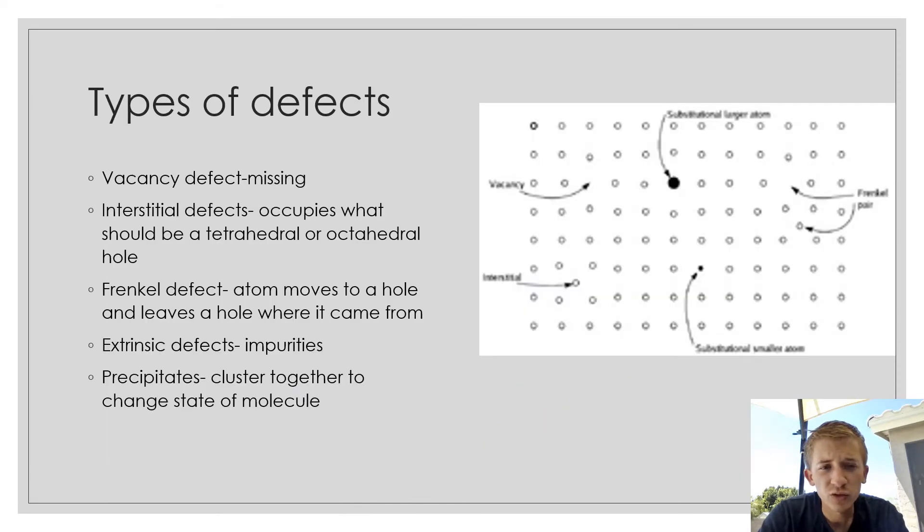There are several types of defects with the chalcogenides. The vacancy defect is just a missing atom. The interstitial defect is an atom that occupies what should be a tetrahedral or octahedral hole, as you see on the right. The Frenkel defect is when an atom moves to a tetrahedral or octahedral hole and leaves a hole where it came from.